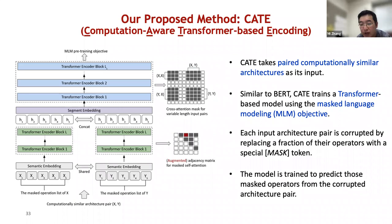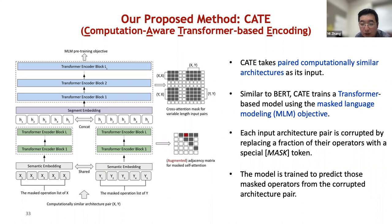To alleviate the limitations of existing computation-aware encoding methods, we propose KATE. At a high level, KATE takes a pair of computationally similar architectures as its input. Similar to BERT's masked language modeling approach, KATE trains a transformer-based model using a masked language modeling objective. Each input architecture pair is corrupted by replacing a fraction of their operations with a special mask token, and the model is trained to predict those masked operations from the corrupted architecture pair.